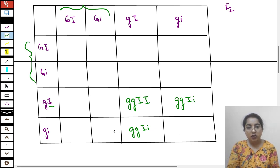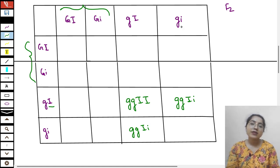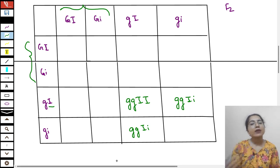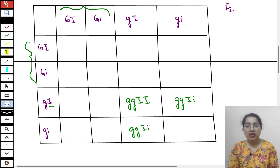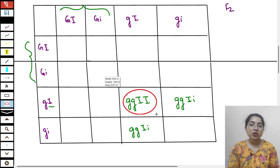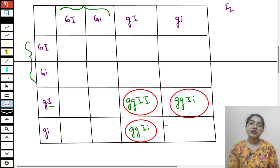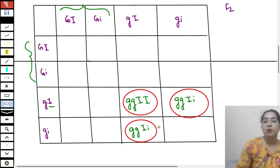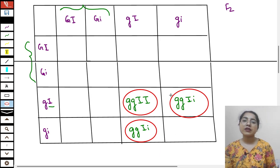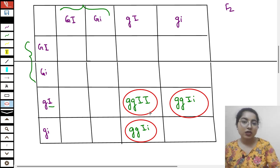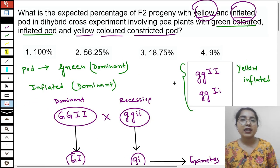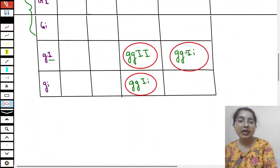Third: small g is present — that means yellow — but small i and small i are both present, so if small i is present, they will be constricted. That gives no benefit. So we had three valid combinations: small g small g capital I capital I, and small g small g capital I small i. This is the homozygous and heterozygous for inflated. So three yellow inflated combinations came.